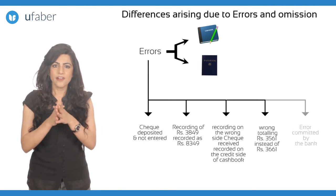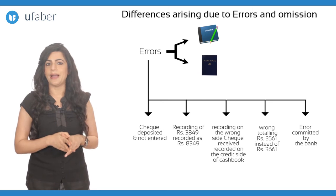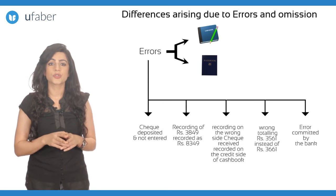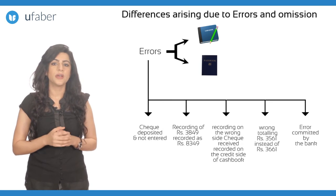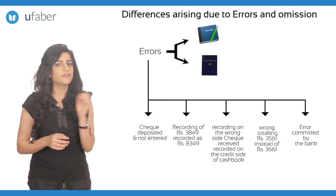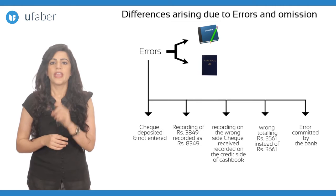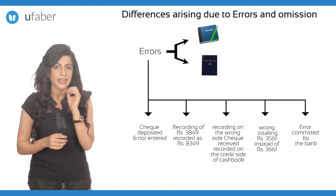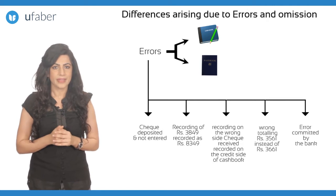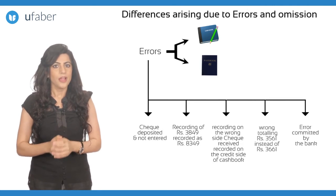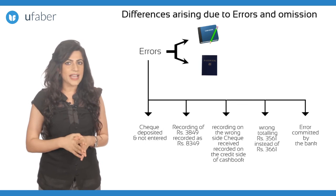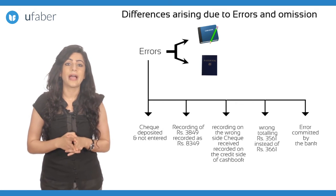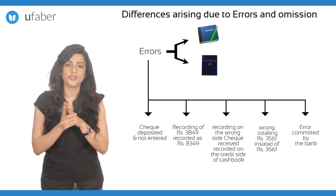5. Error committed by the bank by recording transactions of other customers in a different bank account instead of the respective account of that customer. For example, recording transactions of Aminash in the bank account of Vijay.